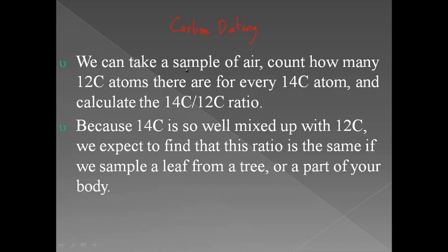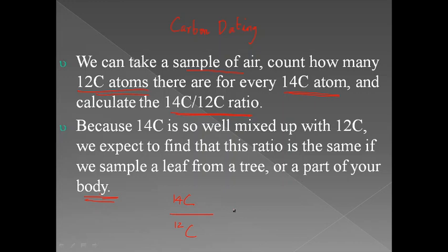In carbon dating, we take a sample — whether a fossil or whatever object whose age we need to determine — and we count the number of C-12 atoms and C-14 atoms, then calculate the ratio of C-14 to C-12. Because C-14 is so well mixed with C-12, we expect to find that this ratio is the same whether we sample a leaf from a tree or a part of our body. In every living being and in the air, the C-14 to C-12 ratio is a constant — that is, as long as it is living.